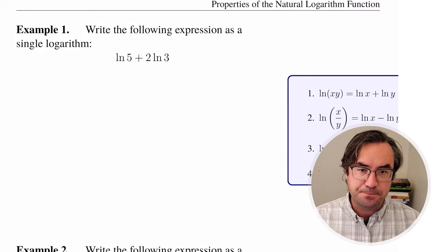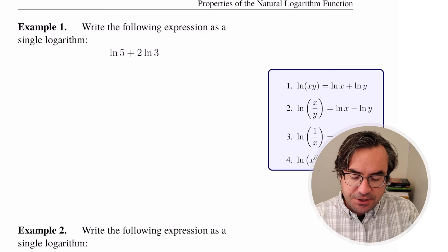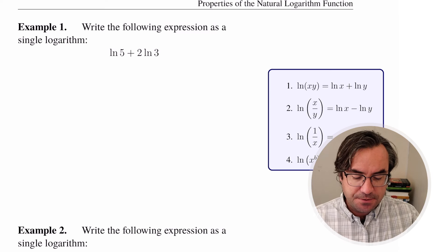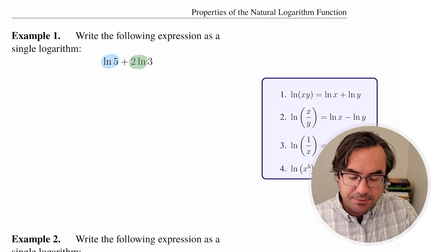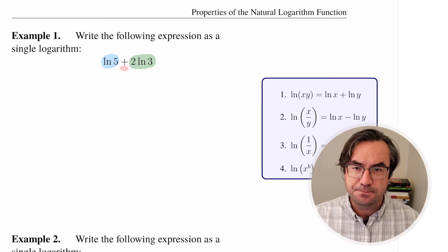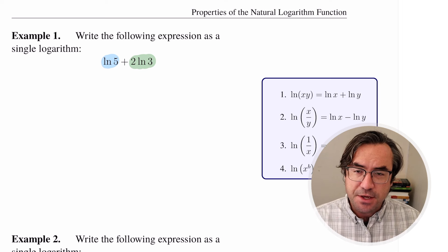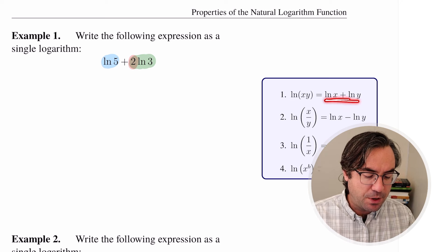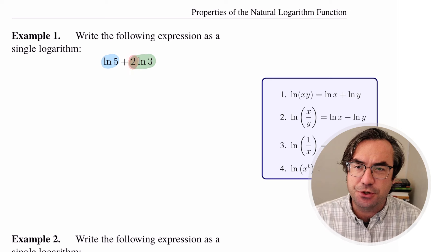Let's try example one. We're going to write this expression as a single logarithm. The expression is natural log of 5 plus 2 times natural log of 3. We want to use our log properties. We have two log expressions — natural log of 5 and 2 times natural log of 3 — and we're adding them. The issue is this 2 in front of natural log 3. We can only use the addition property if it's natural log of something plus natural log of something, so we have to deal with that constant multiple.